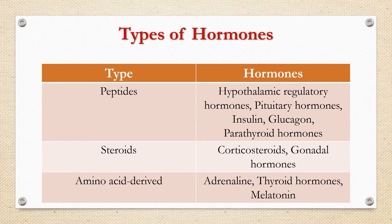According to the biochemical source, hormones are classified into peptides, steroids, and amino acid derived hormones. Peptides include hypothalamic regulatory hormones, pituitary hormones, insulin, glucagon, and parathyroid hormones. Steroids include corticosteroids and gonadal hormones like testosterone, estrogen, and progestin. Amino acid derived hormones include adrenaline (a catecholamine), thyroid hormones, and melatonin.